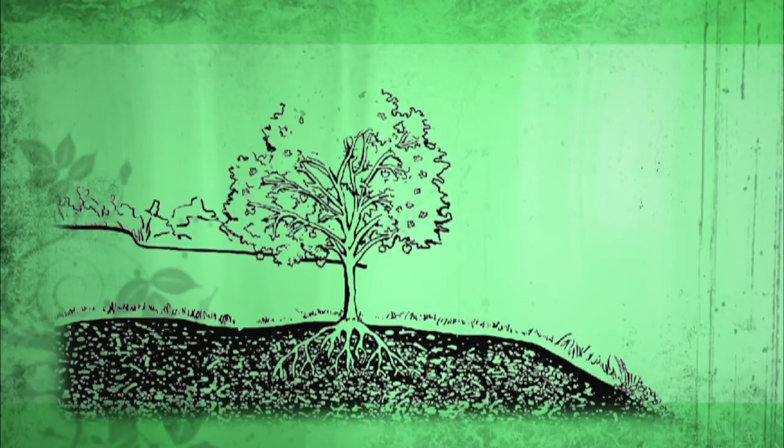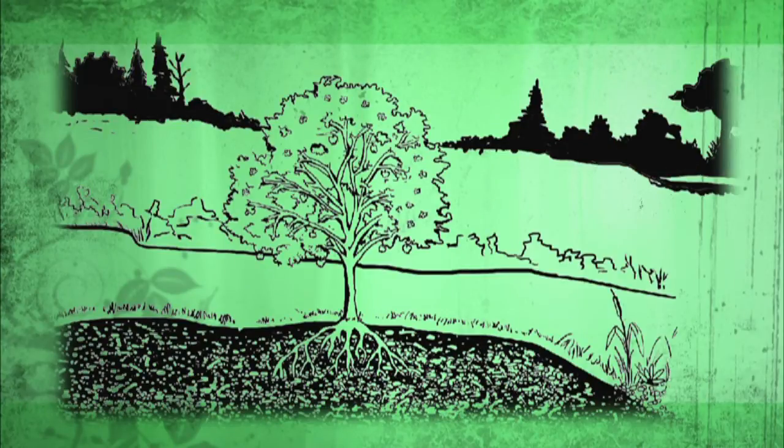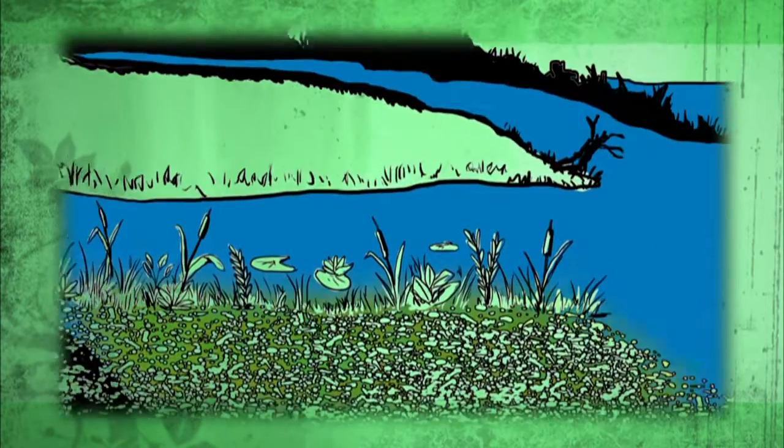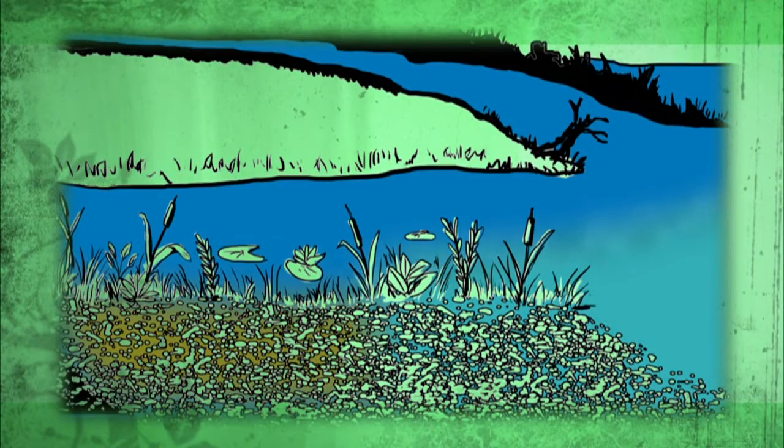Wetlands are not only a product of the water cycle, they also play their own important roles within the water cycle. First, the soils and plants in wetlands filter and clean impurities out of the water. That helps remove pollution from the water cycle.